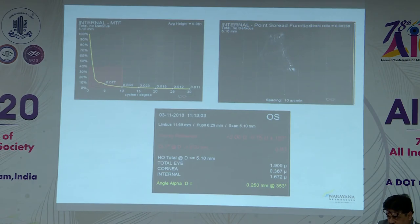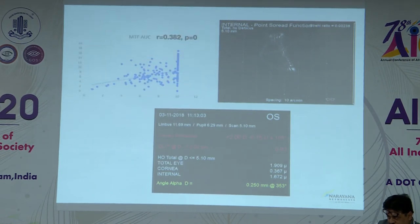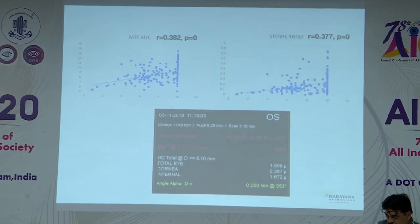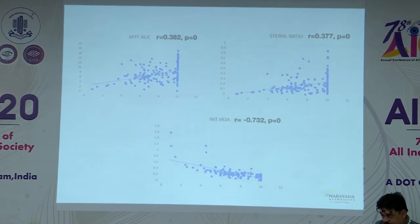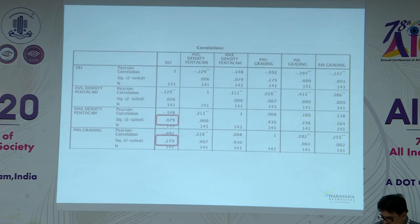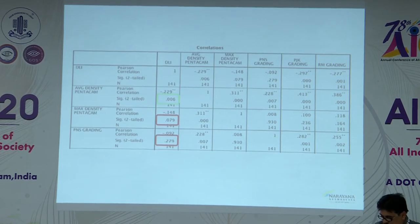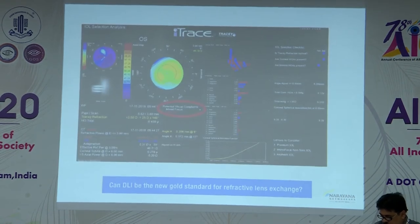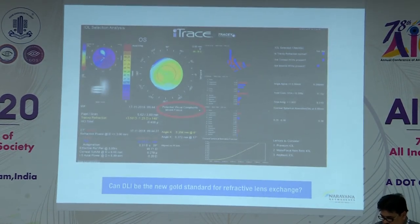When comparing quality of vision, the modular transfer function was directly related to DLI, as was the Strehl ratio, which represents contrast sensitivity. Internal higher-order aberrations were inversely related to DLI. Patients with DLI less than 5 had maximum cataract grading on the i-Trace. An incidental finding was that the average density on the Pentacam matched most closely with the i-Trace, whereas currently we measure maximum density — suggesting DLI may be a new gold standard parameter.